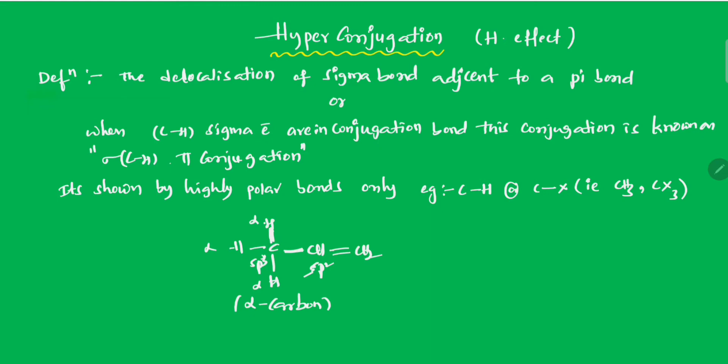The sigma CH electrons are in conjugation, and this is known as sigma CH pi conjugation.